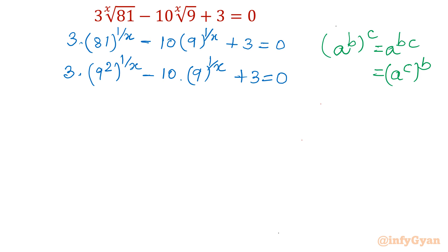So I will use this relation. Let me show you: 3 times 9 power 1 over x, I am swapping the powers. By the property, a power b whole power c can be written as a power c whole power b. So this whole power will be 2 minus 10 times 9 power 1 over x plus 3 equal to 0.